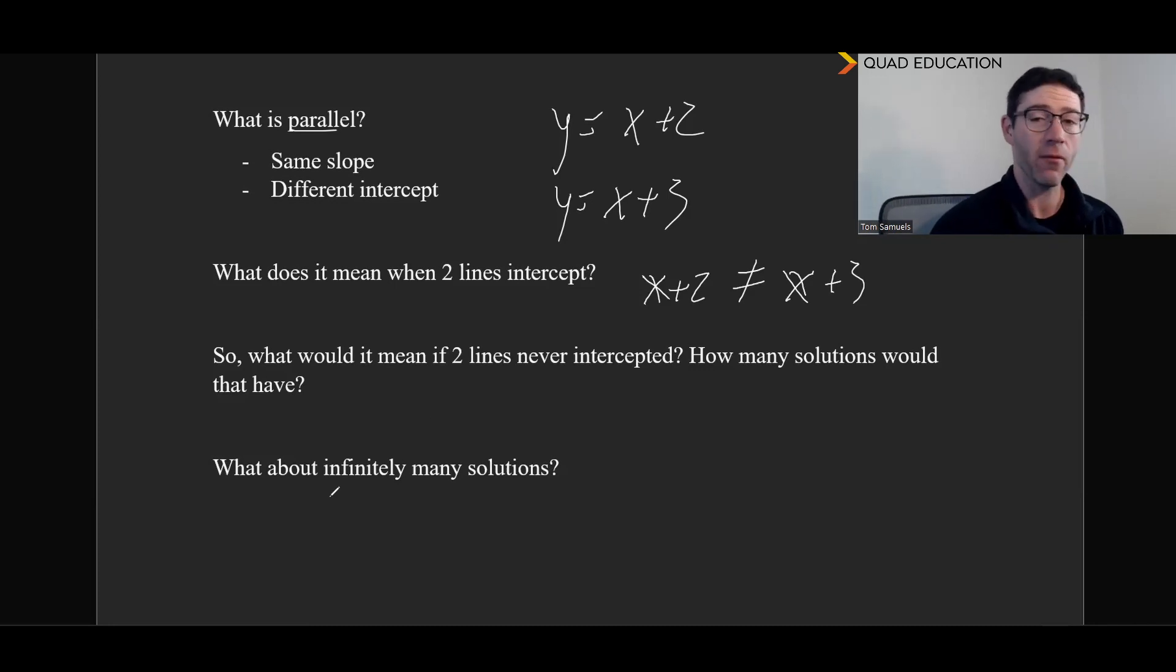And then what about infinitely many solutions? That would mean that we have one line stacked on top of the exact same line. So it's intercepting at every possible point, which is harder to visualize because you sort of have this line and then the same line. And in order to see that same line, you have to kind of necessarily break the rule. But I think hopefully this helps.